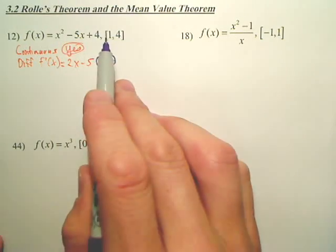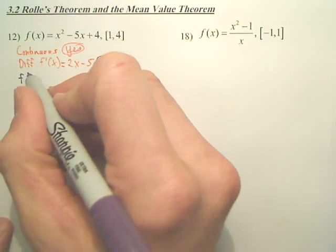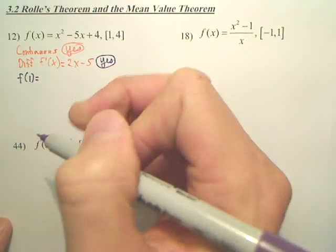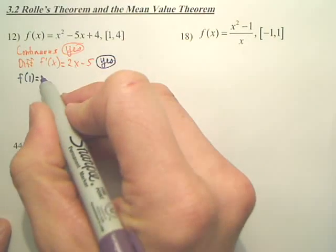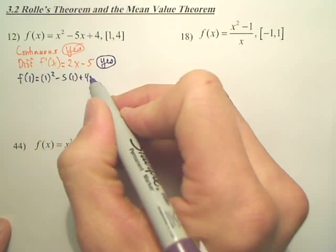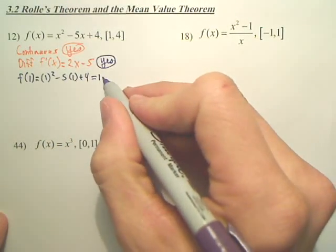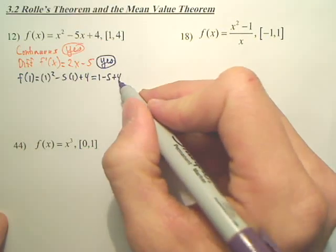Okay. The last stipulation is to see if the two outputs are the same height. So, the next step is you got to check if f of 1, what does that equal? Well, just plug it in. 1 squared minus 5 times 1 plus 4.